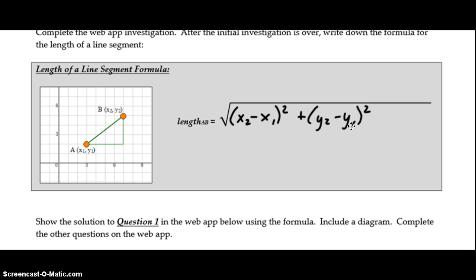You should recognize y2 minus y1 as our rise and x2 minus x1 as our run from our slope formula. And then of course we're squaring the sides and taking the square root to find the side of the hypotenuse.